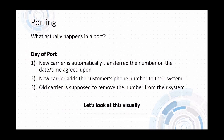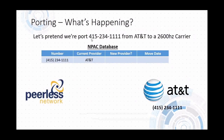On the date of port, the new carrier is automatically transferred the number from the old carrier. The new carrier adds the customer's phone number into their system — most do this a day or a couple of days in advance via pre-provisioning. The third step is that the old carrier, once the port completes, should remove that phone number from their system.